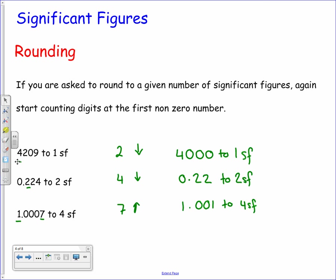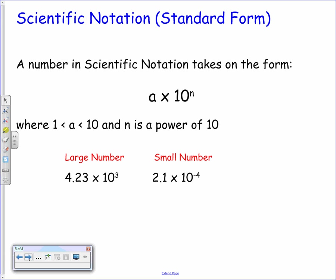So that brings us on to scientific notation. A number is in scientific notation if it takes on the form a × 10^n, where a has to be a number between 1 and 10, and n is a power of 10. It tells you how many times the number has been multiplied by powers of 10 — a hundred, a thousand, ten thousand, and so on.